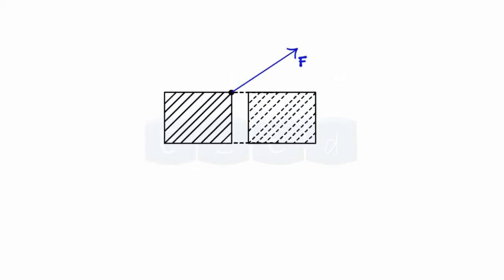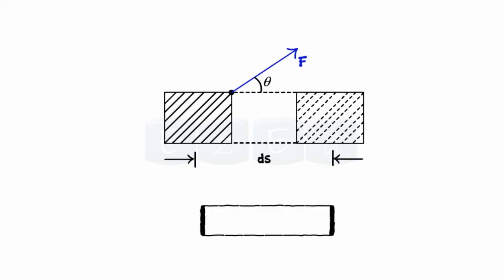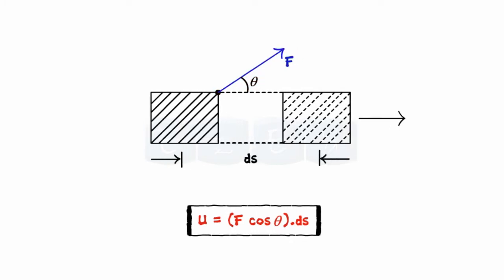Let us now learn about work done by a force. If a rigid body is subjected to a force F, which causes an infinitesimal displacement, then the work done U by force F during the displacement can be given by the formula, where theta is the angle between the direction of force and the direction of displacement.